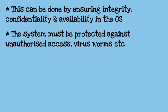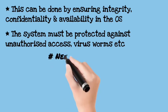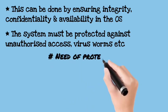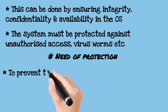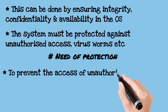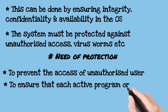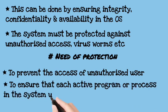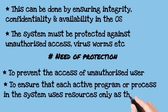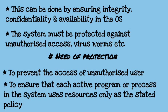Now, who is to protect the system? Actually, they will protect against unauthorized access — that is, worms and viruses. The need of protection: first, we need to protect against unauthorized access. Second, we need to protect active programs or processes which are running in our system, and we need to use those resources according to system policy which will be written in the system policy.